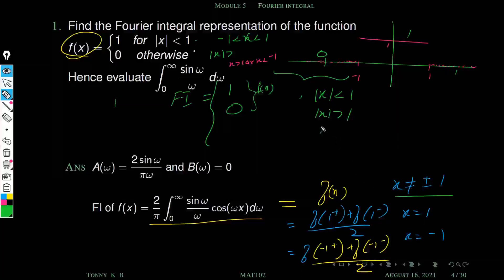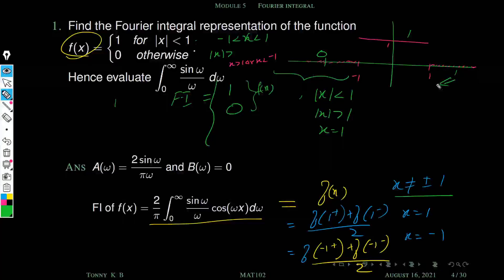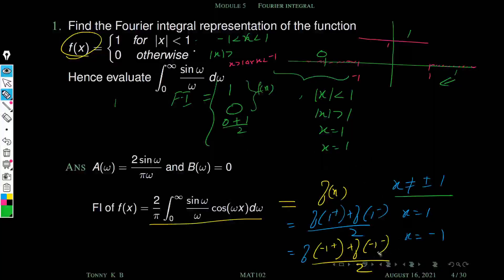At x = 1: the Fourier integral equals the average of the limits. f(1⁺) — the right-hand limit at x = 1 — is 0. f(1⁻) — the left-hand limit — is 1. So (0 + 1)/2 = 0.5. At x = −1: f(−1⁺) (right-hand limit approaching −1 from the right) is 1, and the left-hand limit is 0, so (1 + 0)/2 = 0.5.